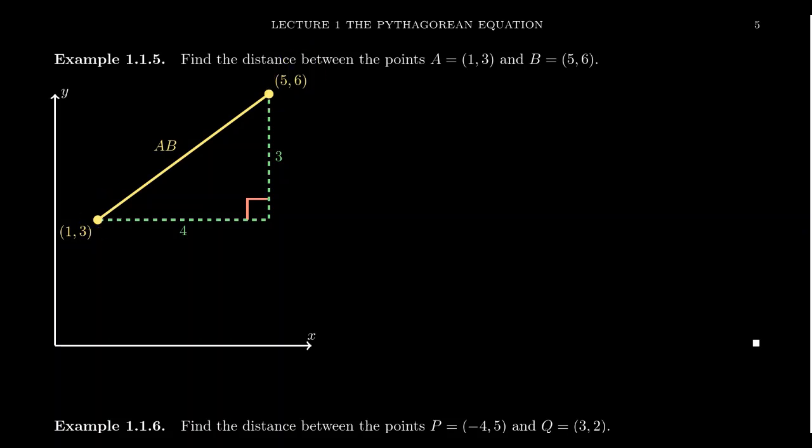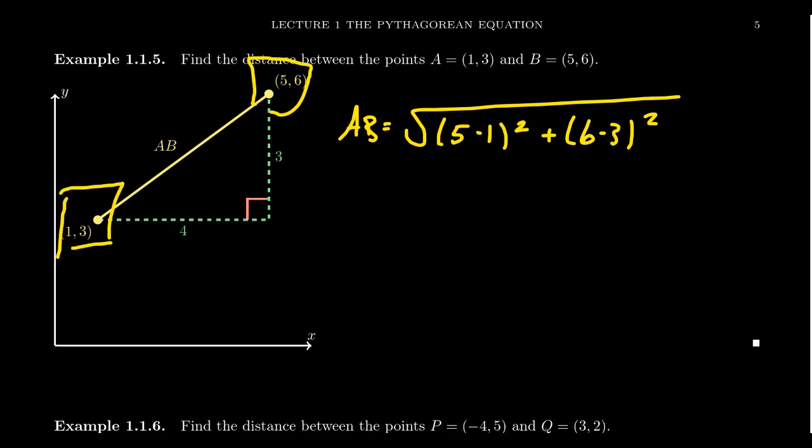And so let's compute the distance between them by the distance formula AB. It's going to equal the square root of, take the difference of the x-coordinates, 5 minus 1 squared. And then you're going to add to that the difference of the y-coordinates squared. And honestly, it doesn't matter who comes first. It doesn't matter who's on first, who's on second. A could be the first point, and B could be the second point.